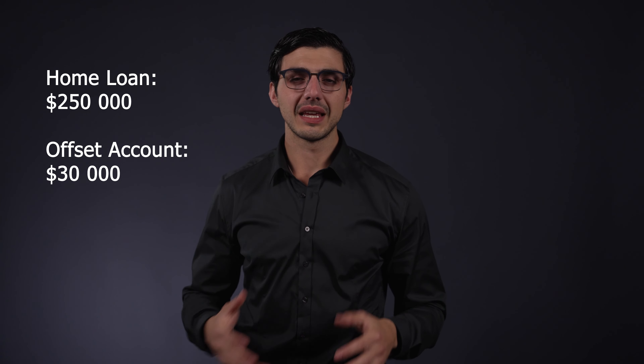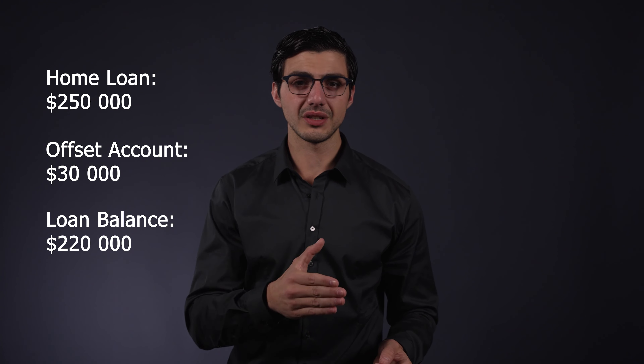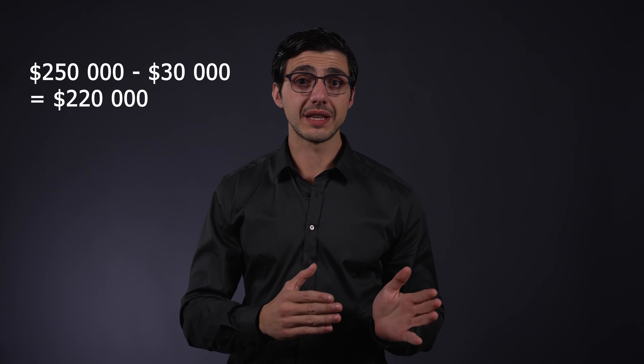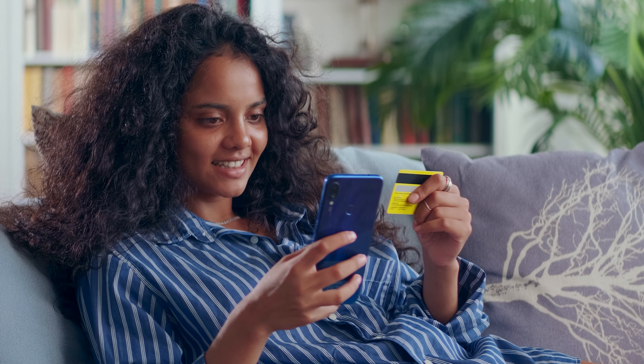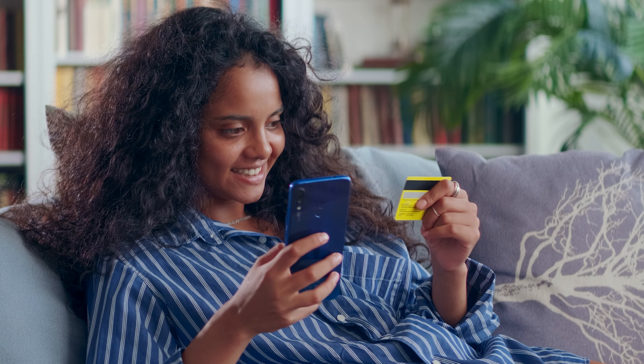Say you have a home loan of $250,000 and $30,000 in your offset account. In this situation, you're only going to be charged interest on the loan balance of $220,000, because $250,000 minus $30,000 equals $220,000. Because the offset account acts like an everyday account, your $30,000 is still accessible whenever you need it, even while it's working to reduce your overall interest repayment. The advantages essentially depend on how much money you have sitting in it and the type of offset you have — you can have 100% offset accounts or 50% offset accounts, depending on how your bank sets this up for you.